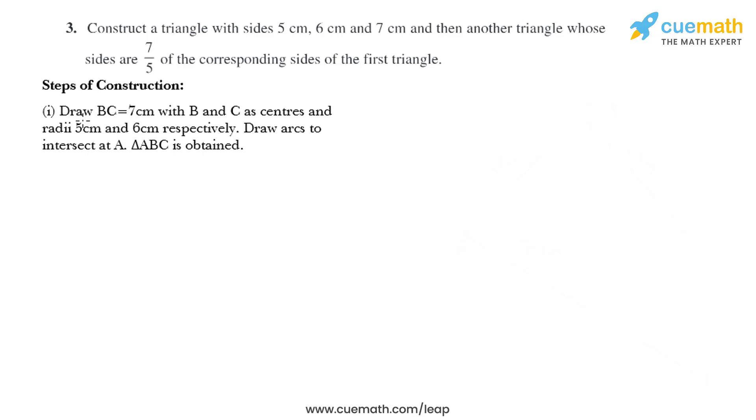Draw BC equals 7 cm with B and C as centers and radii 5 cm and 6 cm respectively. Draw arcs to intersect at A. Triangle ABC is obtained. So let's draw BC equal to 7 cm.